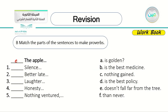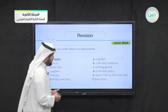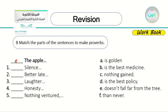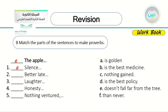Let's jump to exercise B3: match the parts of the sentences to make proverbs. We have five sentences to match. The first one is already done — the apple doesn't fall far from the tree, meaning you will be like one member of your family. Number one: silence — yes, silence is golden.